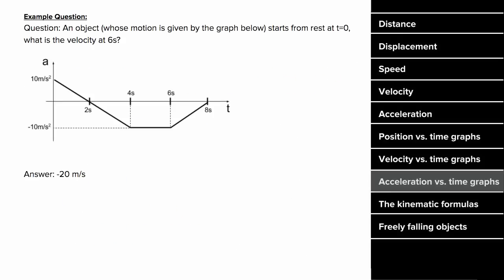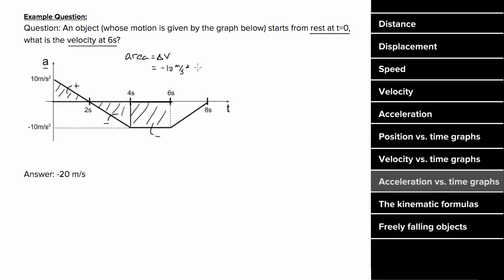For example, if an object starts from rest at t equals zero and you want the velocity at six seconds using this acceleration graph, you find the area under the graph from zero to six seconds. The first triangular area is positive and cancels with the equally negative second triangular area. The remaining rectangle has a height of negative 10 and width of two seconds, giving negative 20 meters per second — which equals the change in velocity. Since the object started from rest, the final velocity at six seconds is negative 20 meters per second.